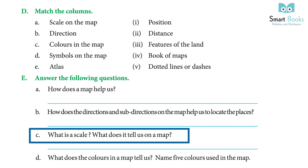Question: What is a scale and what does it tell us on a map? Answer: Every map gives the measure of distance in the form of a scale shown in the corner of the map.